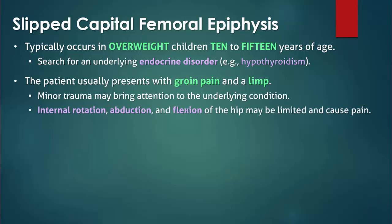In addition to limited range of motion, there may be obligatory external rotation of the leg when the hip is actively being flexed. Other findings include an antalgic gait with the affected leg turned outward — that is, externally rotated — or a Trendelenburg gait in chronic cases. Atrophy of the thigh and buttock muscles may occur with disuse, but is a less conspicuous finding in obese patients.